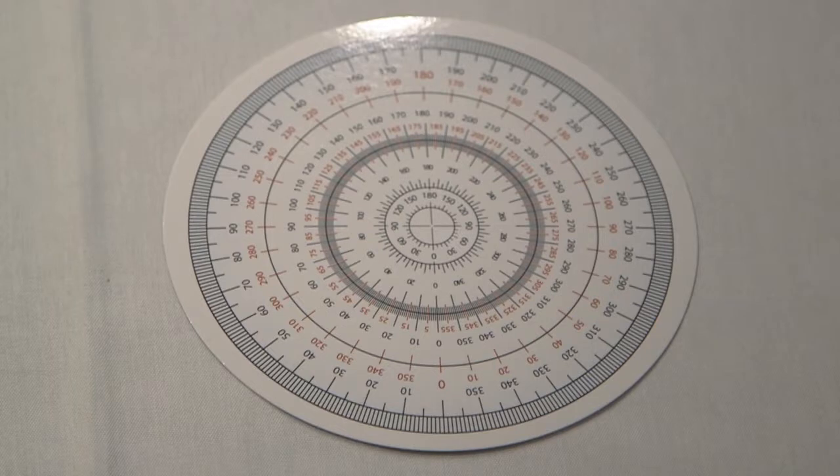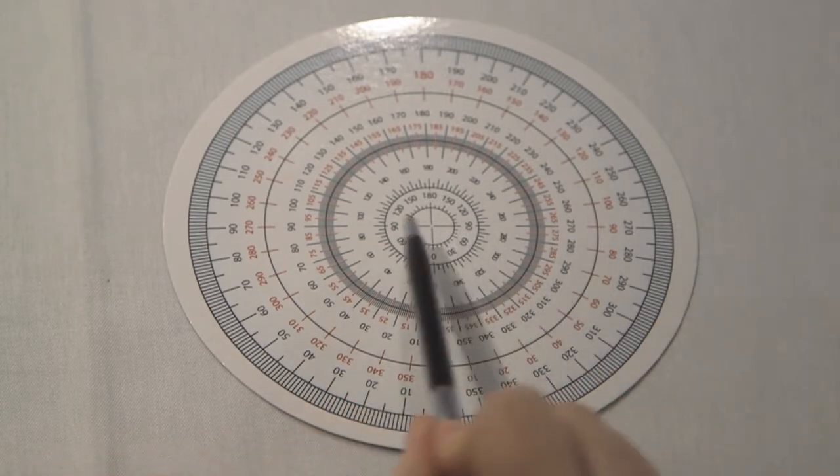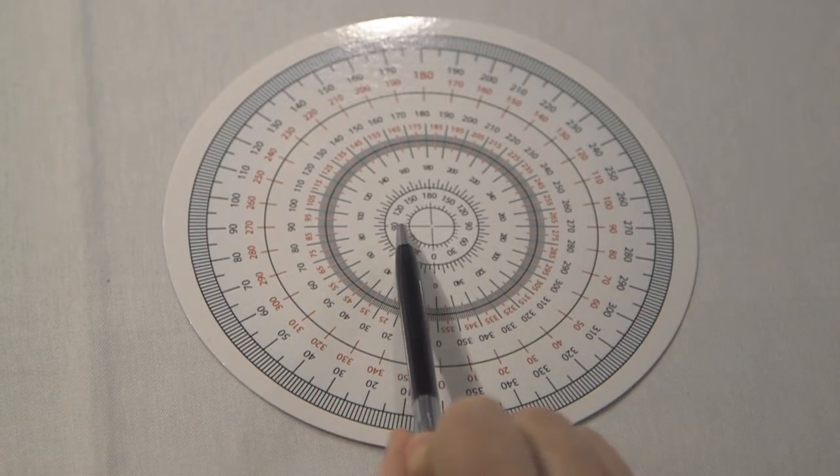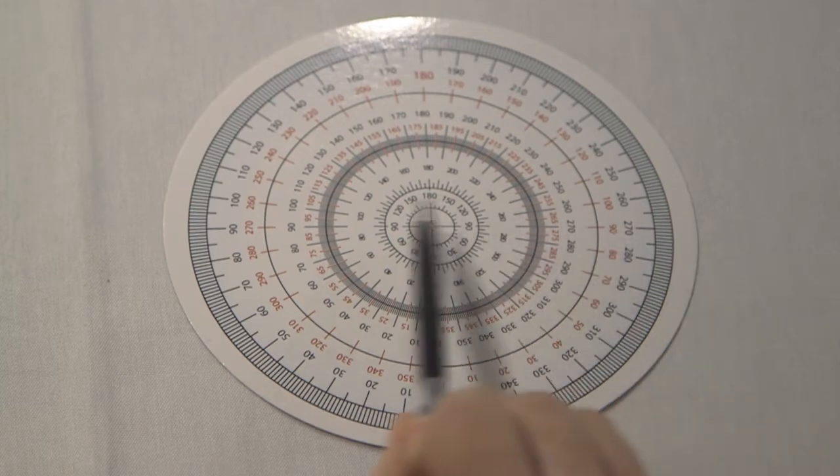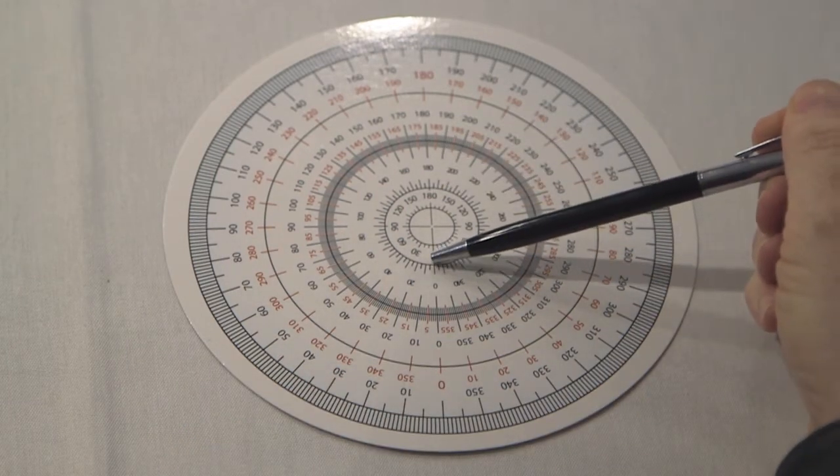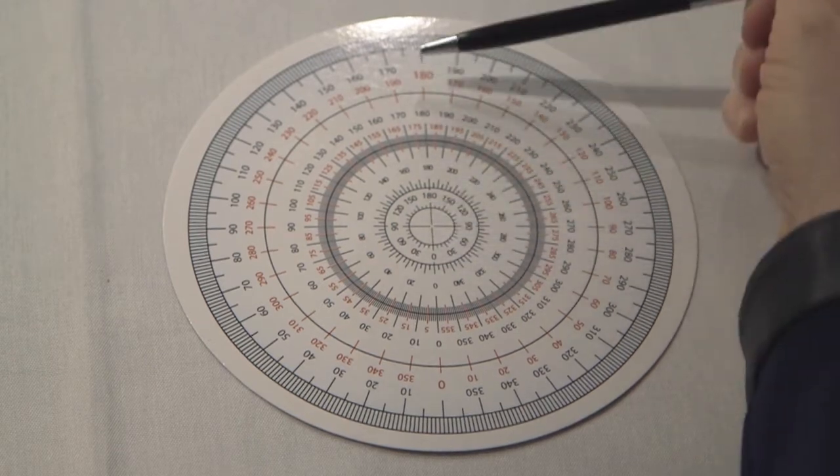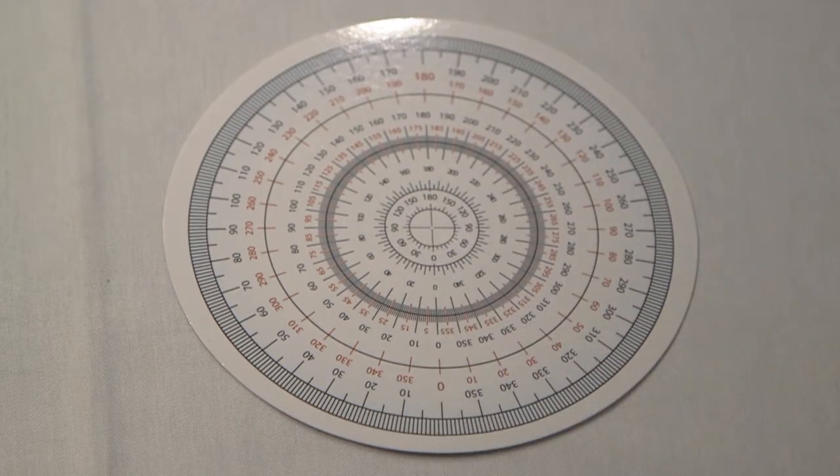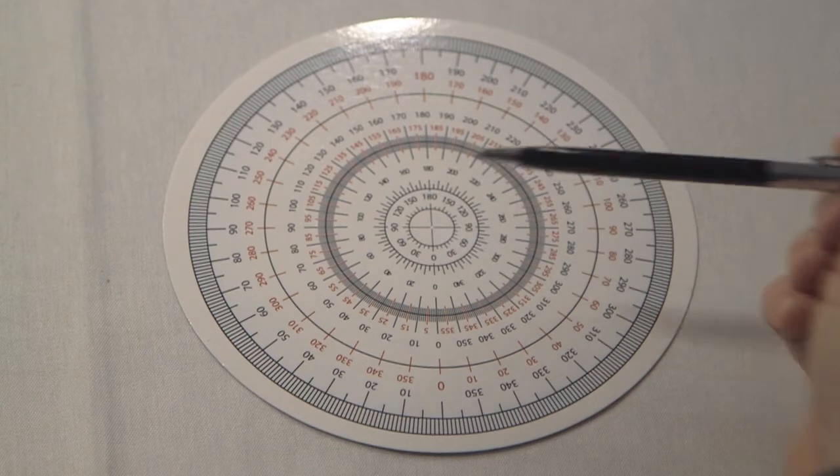The first thing you want to do is position your protractor. We're going to have the 90-degree mark going across like this, and we're going to have that 0 and 180-degree mark pointing directly towards us, and that's going to be the center right there.